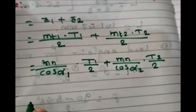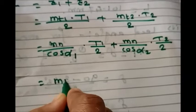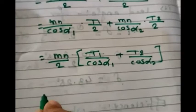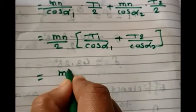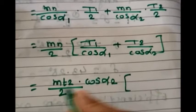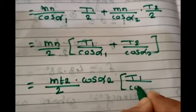Taking mn and 2 as common factors: L = (mn/2) · [t1/cos α1 + t2/cos α2]. Now instead of mn, let's substitute mt2·cos α2, since we know that mn = mt·cos α. So: L = (mt2·cos α2 / 2) · [t1/cos α1 + t2/cos α2].